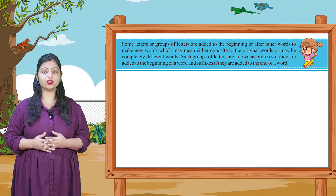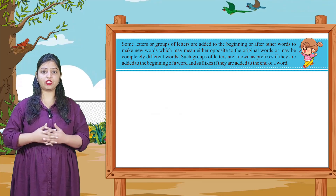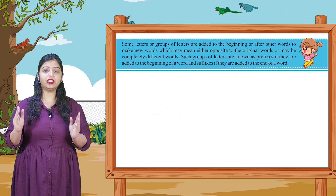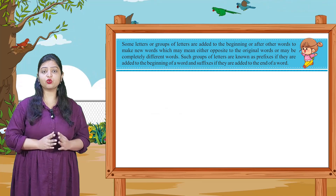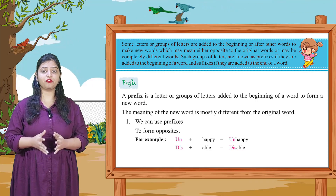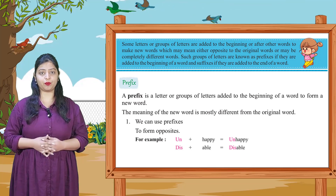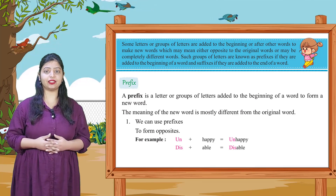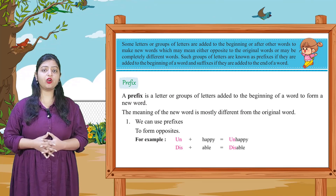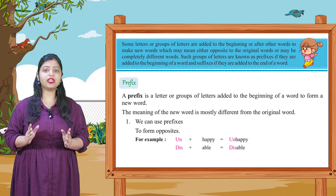Prefixes aur suffixes kuch aise words hote hain jinko hum kisi doosre word ke saath ya toh pehle lagate hain ya phir baad mein lagate hain. Jab hum in words ko aage ya peeche lagate hain, tab unse jo word banta hai uska ya toh opposite meaning ho jaata hai ya us word ki quality change ho jaati hai. A prefix is a letter or group of letters added to the beginning of a word to form a new word. The meaning of the new word is mostly different from the original word.